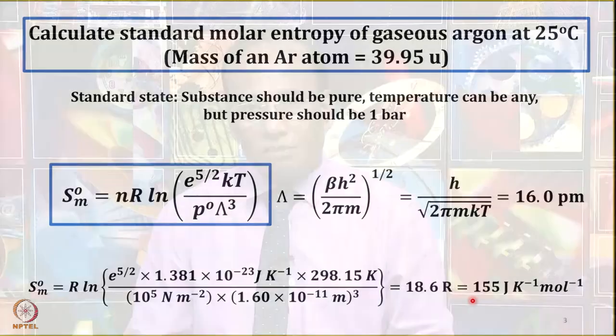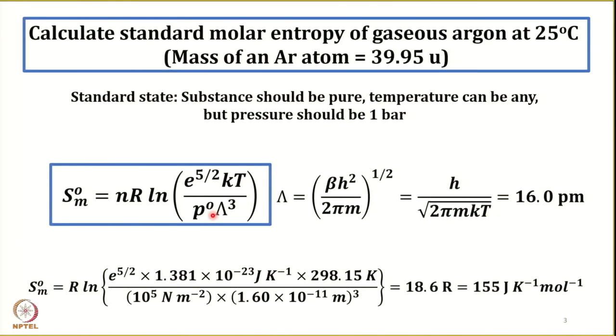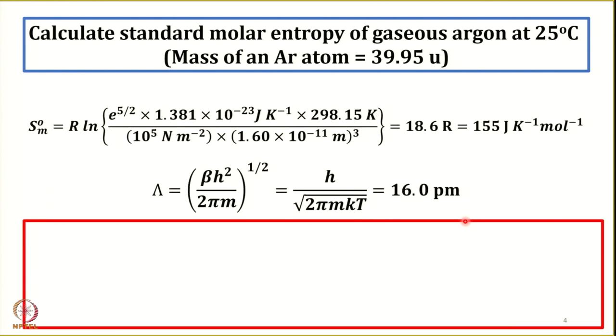Simple calculations. We need to be careful about what value of P⁰ to use, and we must put the molar mass in the correct way — that is, the mass of one particle. We have obtained a molar entropy of 155 J/K/mol from a thermal wavelength of 16 picometers.